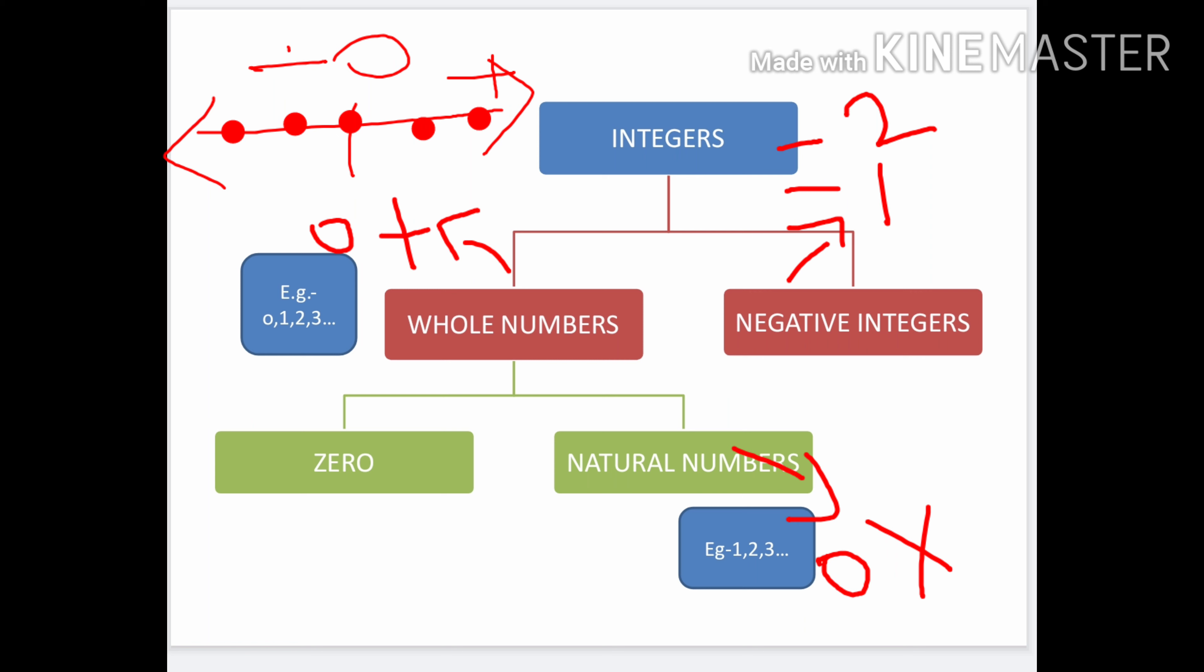Next, whole numbers are again classified into two types: zero and natural numbers. Zero is just zero. Natural numbers are positive numbers excluding zero, like one, two, three, etc.